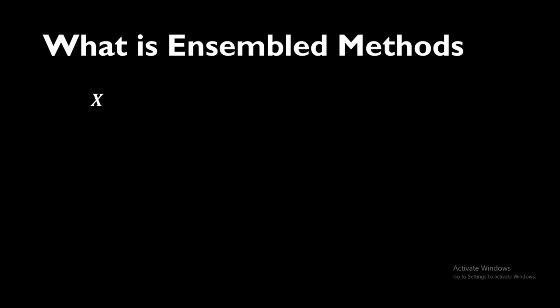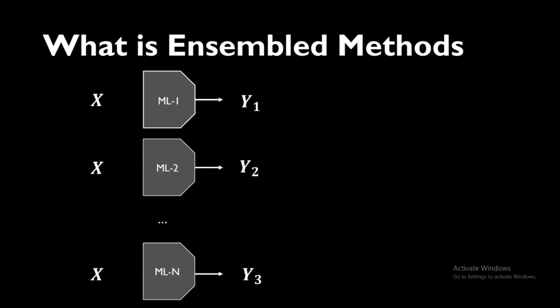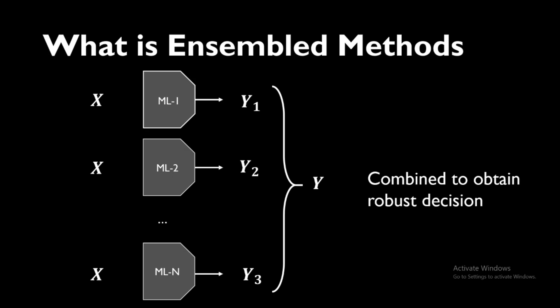Ensemble means basically combining various methods together to get a more robust decision. Suppose we have input x, which is a collection of various features. We pass it through machine learning model ML1 and get output y1. We do the same for ML2 up to MLm, getting predictions y1, y2, up to yn. Then we aggregate the output of each model to find a single, more robust output.